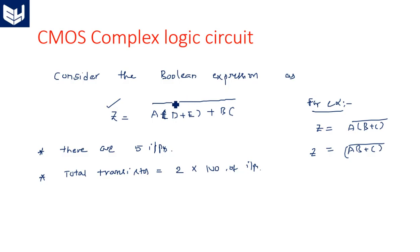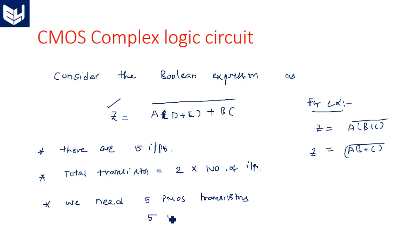In NMOS, the pull-up network has only one transistor, but in CMOS logic circuit design we have a PMOS realization in the pull-up network. So we need 5 PMOS transistors and 5 NMOS transistors — 5 plus 5 equals 10, which is two times the total number of inputs.